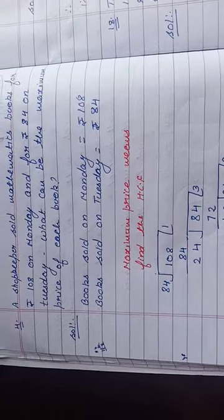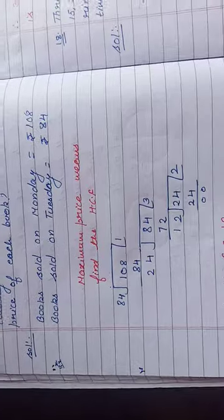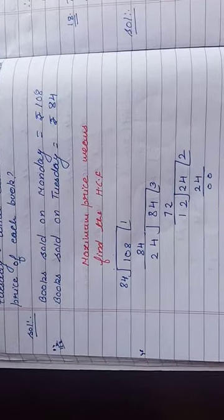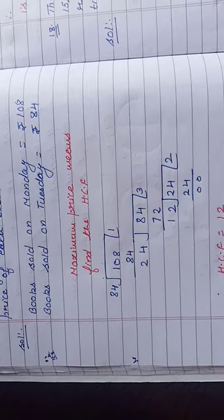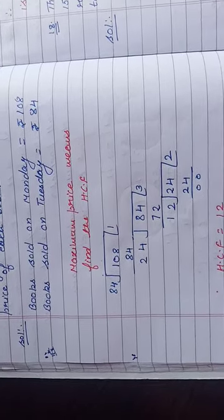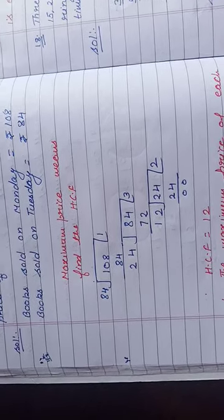For finding the HCF of these two numbers, we will choose the division method. For division method, we always take the greater number as dividend and smaller number as divisor. So now we will divide 108 by 84.